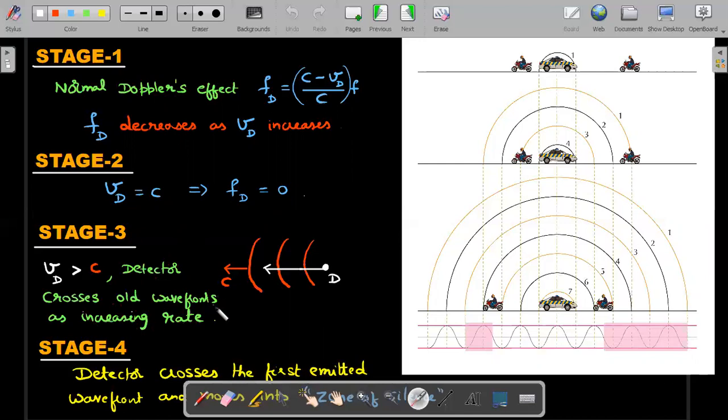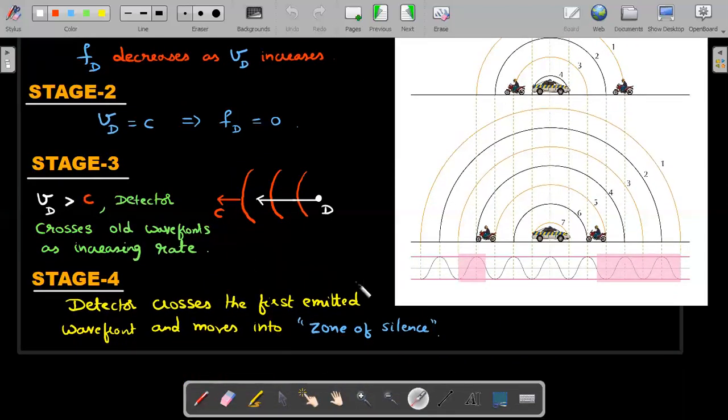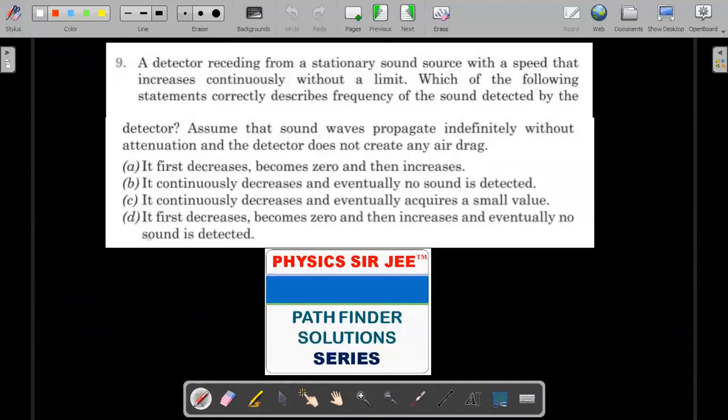Then stage four appears where the person has become so fast that the first wavefront that crossed him would be somewhere, and he will cross that wavefront also. Then he'll reach a stage at a particular position we call it as zone of silence. Once he has crossed the first wavefront, then he will never receive the sound. That zone is called a zone of silence. Going by each of these stages, you should understand that the required option is that the frequency initially decreases, becomes zero and then increases, and eventually no sound is detected once he reaches the zone of silence. The answer should be D for the first one.